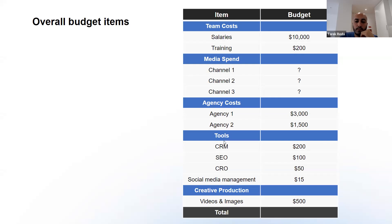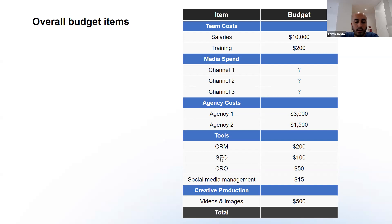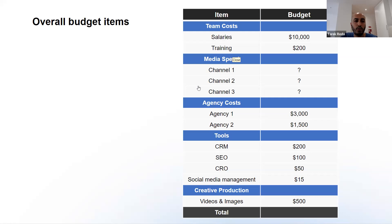You also have tools costs. If you're running a full marketing operation, you'll want to factor in a CRM tool, an SEO tool, a CRO (conversion rate optimization) tool, and maybe a social media management tool. These are all necessary for marketing activities. And of course, you want to allocate budget for creative production — videos, images, and copywriters for ad copy.